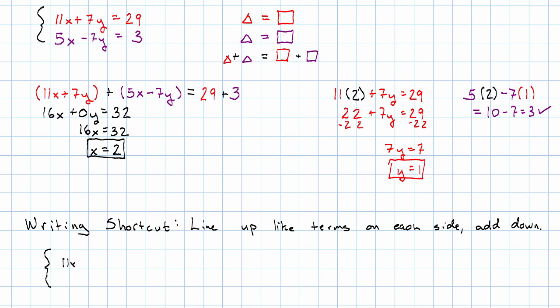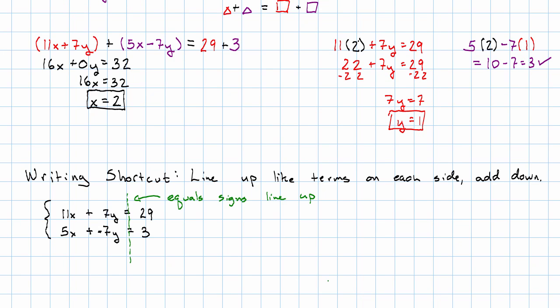So again, we've got 11x plus 7y equals 29, 5x minus 7y equals 3. Remember that minus 7y means plus negative 7y. Other things to notice: the equals signs line up here. If the equals signs don't line up, you're not ready to use the elimination method. Also, the x terms line up, the y terms line up, and the constants line up.